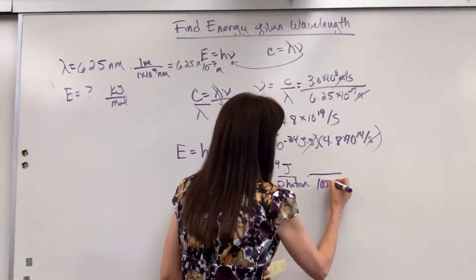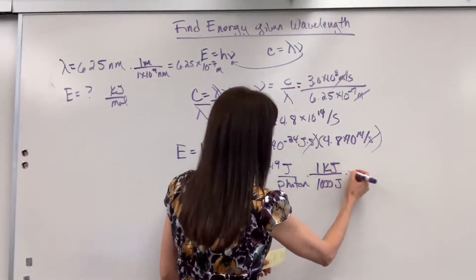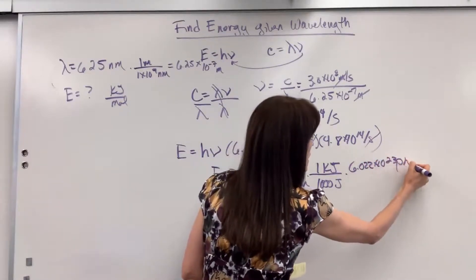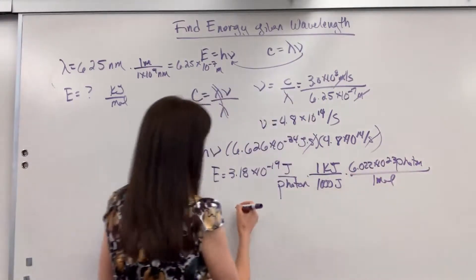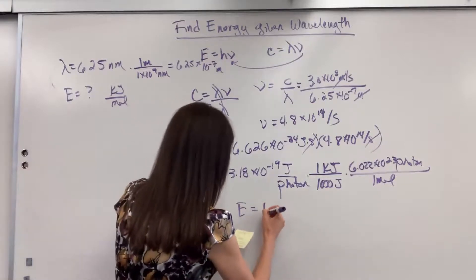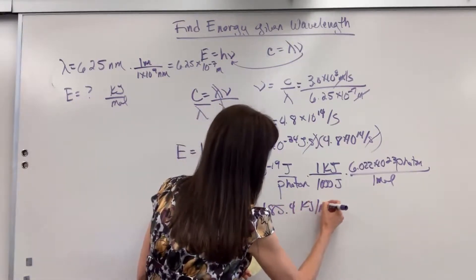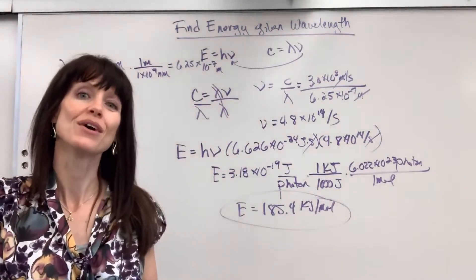We have 1,000 joules in one kilojoule and 6.022 times 10 to the 23 photons per one mole. When we do that math, the energy is 185.4 kilojoules per mole. So that is the energy associated with orange. Pretty cool.